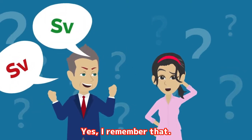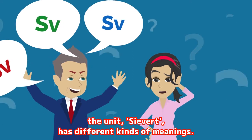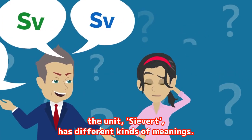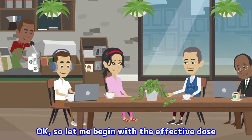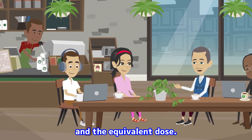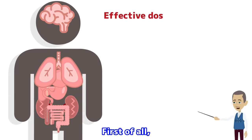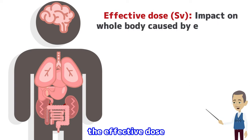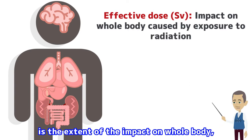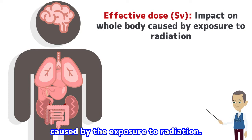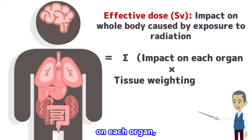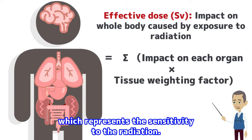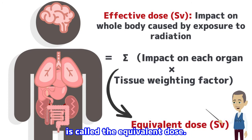Yes, I remember that. I learned that the unit sievert has different kinds of meanings. Wow, you remember the lecture. Very good. So let me begin with the effective dose and the equivalent dose. As I explained earlier, the effective dose is the extent of the impact on whole body caused by the exposure to radiation. The effective dose is calculated by multiplying the extent of impact on each organ by the tissue weighting factor, which represents the sensitivity to radiation. And the extent of impact on each organ is called the equivalent dose.